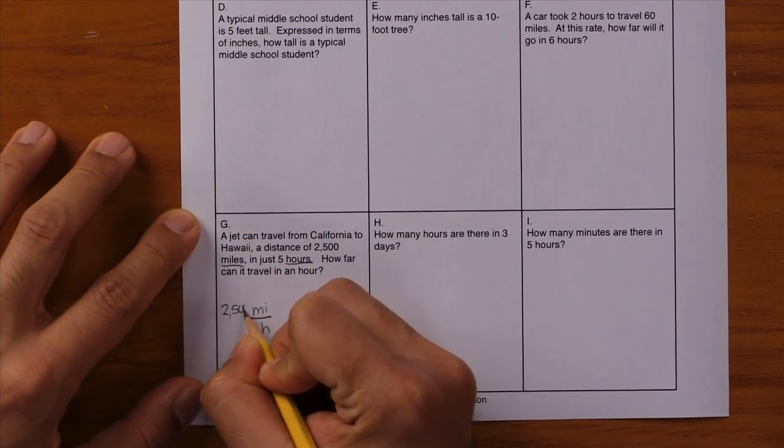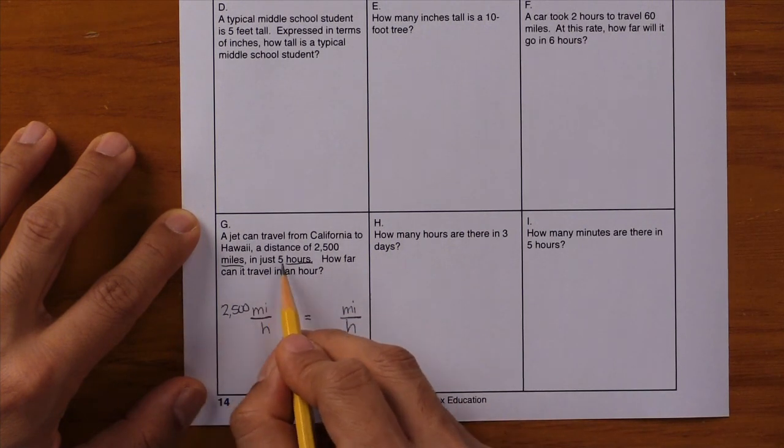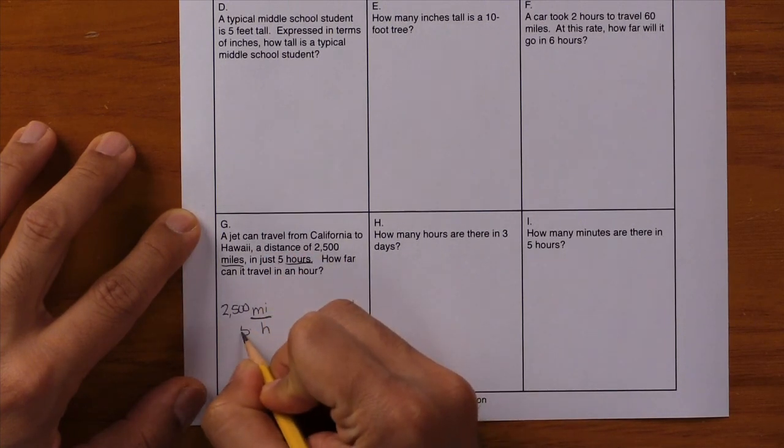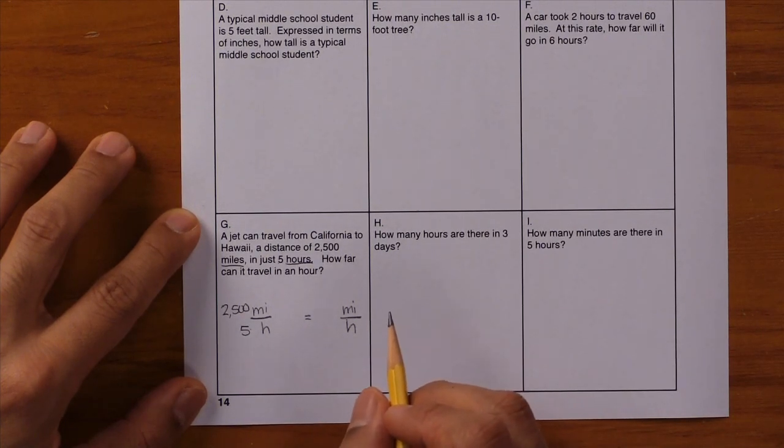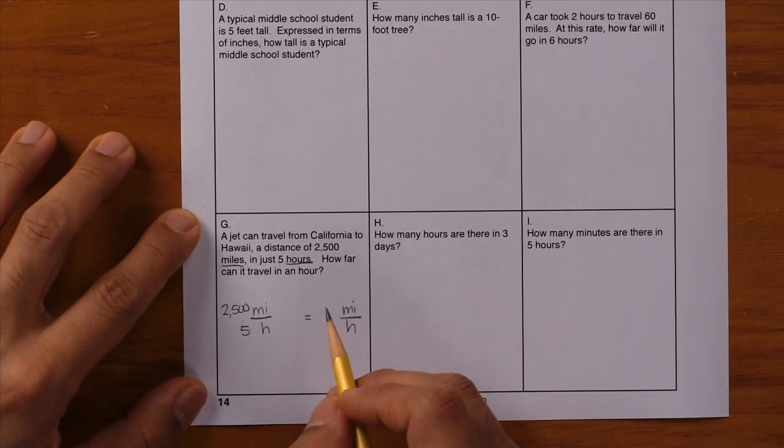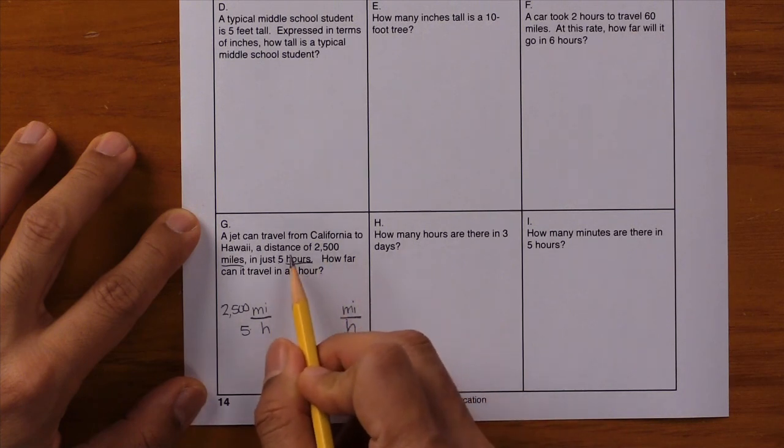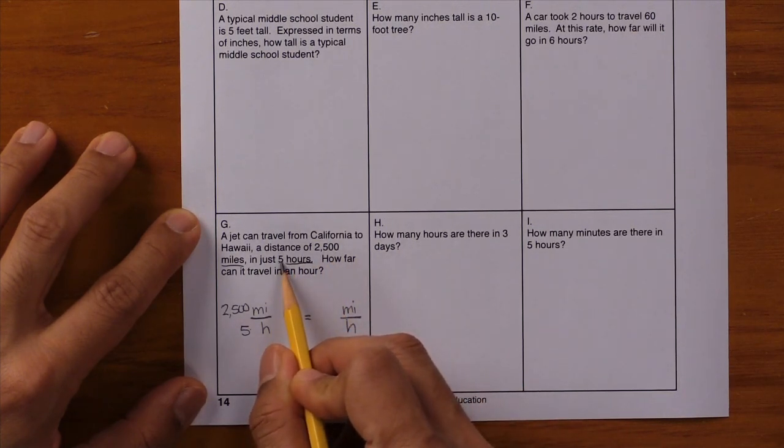2,500 in just 5 hours. Where does that 5 go? It goes with the H for hours. And I feel like there's something missing here. I know that to solve a proportion, I need three numbers, but right now I only have two of them. I seem to be missing a number.